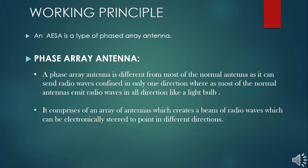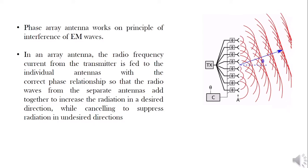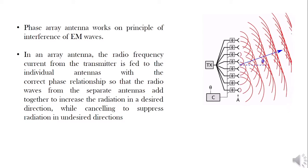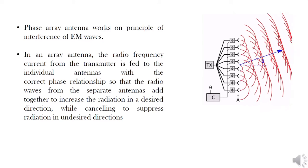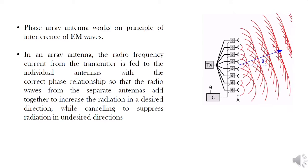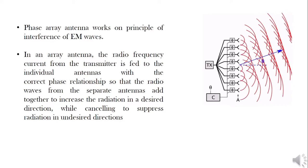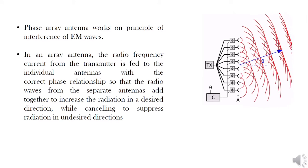A phased array antenna comprises an array of antennas which creates a beam of radio waves that can be electronically steered to point in different directions. A phased array antenna works on the principle of interference of EM waves. In an array antenna, the radio wave frequency is fed to the individual antennas in such a way that the radio waves from each individual antenna add together to increase the radiation in a desired direction while cancelling the radiation in undesired directions.